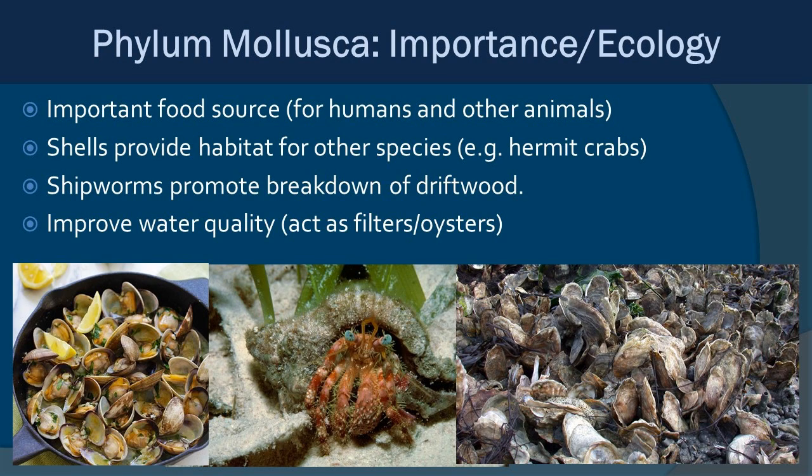Molluscs are very important as a food source — not only for humans who eat shellfish, but also for other animals in both larval planktonic and adult forms. Shells provide habitats for species like hermit crabs. Shipworms are important for breaking down wood in the environment, including wooden ships. And oyster beds — like restoration projects in the Lake Worth Lagoon — act as water filters to help clean up coastal waterways.